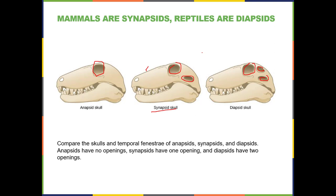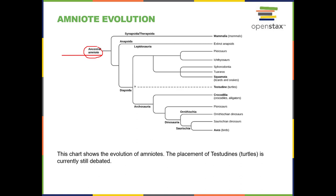We humans are synapsids. From the ancestral amniote, there's a split: synapsids lead to the mammals, and diapsids lead to the reptiles. There are also extinct anapsids, but those aren't a focus here. So all the reptiles fall under the diapsid branch.